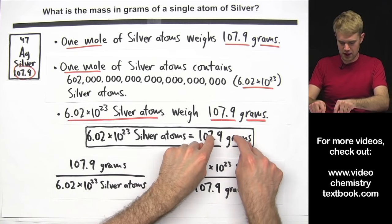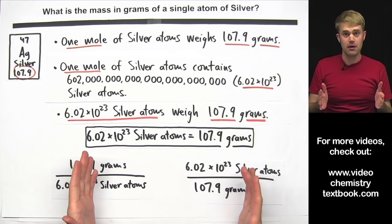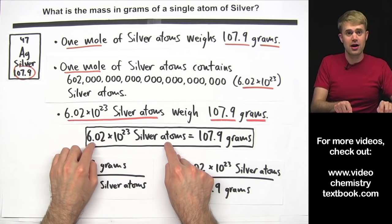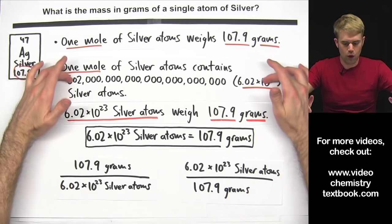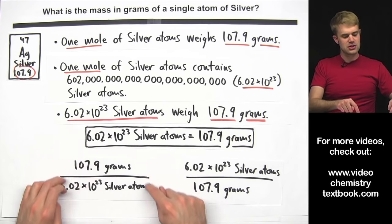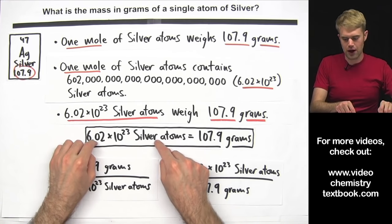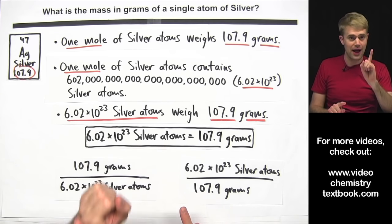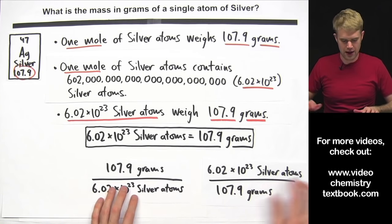One of these conversion factors has grams on the top and one has grams on the bottom, but both of them let us convert back and forth between the number of silver atoms we have and their mass in grams. We can write this equation that then lets us write two conversion factors to go from the number of silver atoms to grams. We will use one of these to go from one single atom of silver to how much it would weigh in grams.